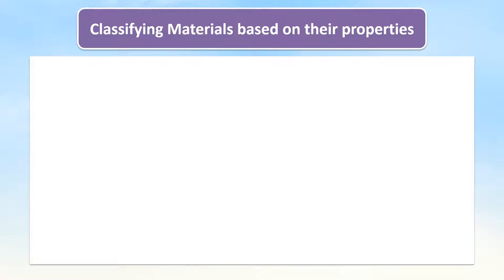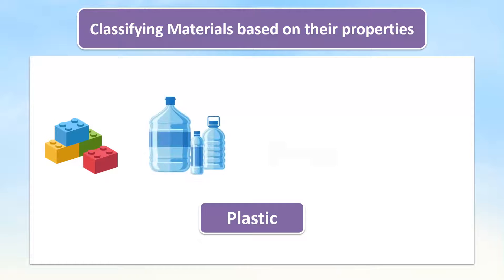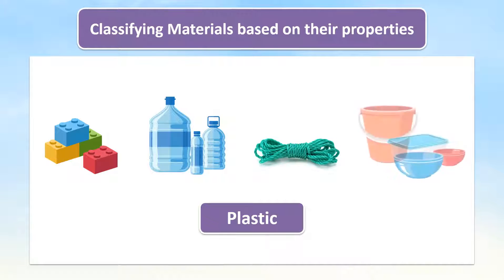Classifying materials based on their properties. For example, plastic. There are many things made from plastic, such as toys, water bottles, ropes, and some kitchen items.